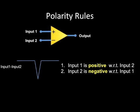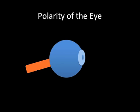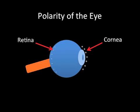We will use these polarity rules to understand eye movements. This is a simple diagram of an eye viewed from the lateral perspective. Posteriorly, we have the retina, and anteriorly, we have the cornea. The retina is relatively electronegative, while the cornea is relatively electropositive.